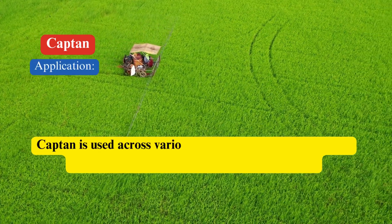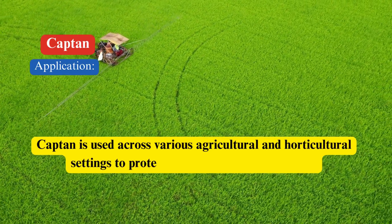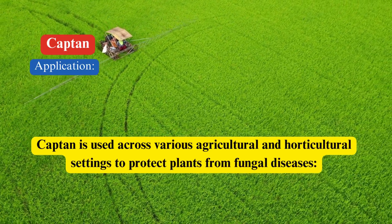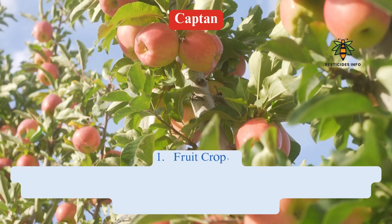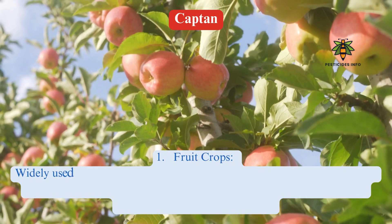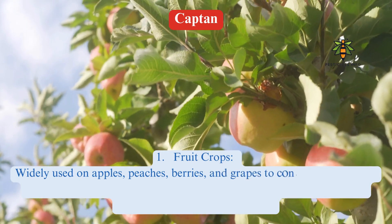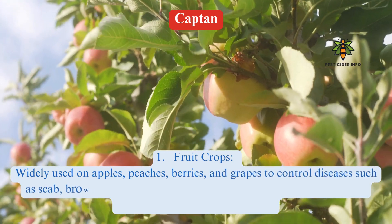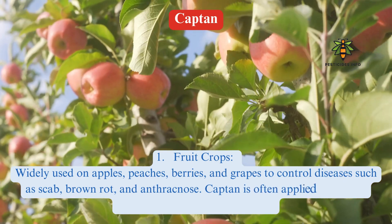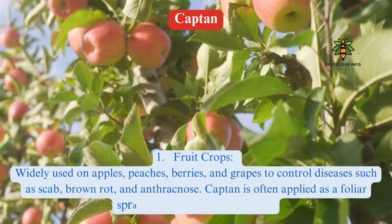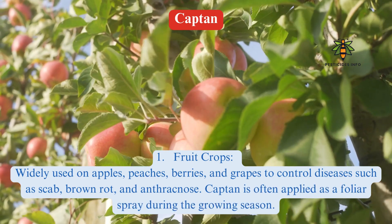Uses. Captan is used across various agricultural and horticultural settings to protect plants from fungal diseases. 1. Fruit crops: widely used on apples, peaches, berries, and grapes to control diseases such as scab, brown rot, and anthracnose. Captan is often applied as a foliar spray during the growing season.